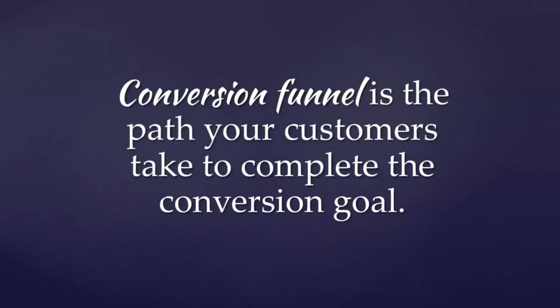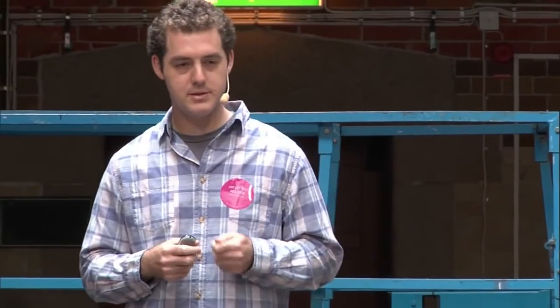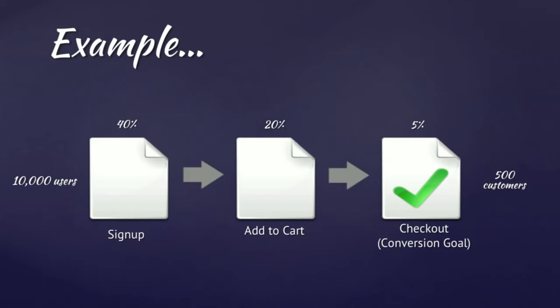A conversion funnel is the path your customers take to complete the conversion goal. In the e-commerce example, we have three steps: sign-up, add to cart, and check out. The three steps form the conversion funnel; the conversion goal is the purchase. In this example, 10,000 users start down the funnel — 40% sign up, 20% add a product to the cart, and only 5% check out. So we have 10,000 users at the beginning and 500 customers at the end.